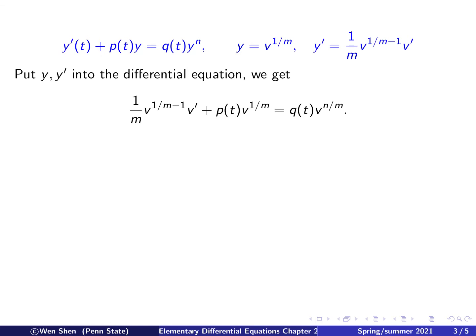And we have the following. So y prime is this. So that's what I put in. And p times y. So it's p times y. And the right-hand side, I have q times y to the power n. That is, take nth power. Then this is v to the power n over m. Now, we multiply both sides of the equation by the inverse of this quantity.